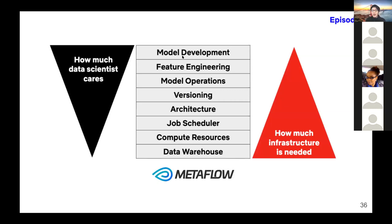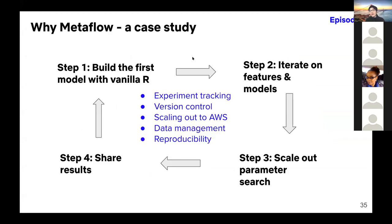After each step I'll do a quick preview of the Metaflow solution to each problem. This is how Metaflow thinks about the problem: on the upper level we have model development and feature engineering; on the lower levels we have data warehouse, compute resources, orchestration, job scheduling, architecture, and versioning. Data scientists care more about the upper stack, but there's a lot of infrastructure needed for the lower stack — especially for a robust, cloud-native solution using AWS.